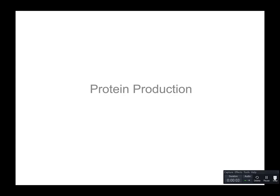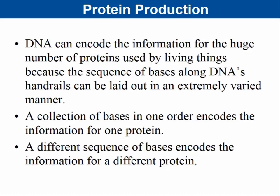Now we move on to how proteins are produced. DNA can encode information for a huge number of proteins because the sequence of bases can be arranged in an extremely varied manner. For a long time scientists thought protein was the genetic information — after all, there are 20 amino acids versus only four DNA bases — but many experiments showed that DNA is indeed the genetic information, and the sequence of bases codes for particular proteins.